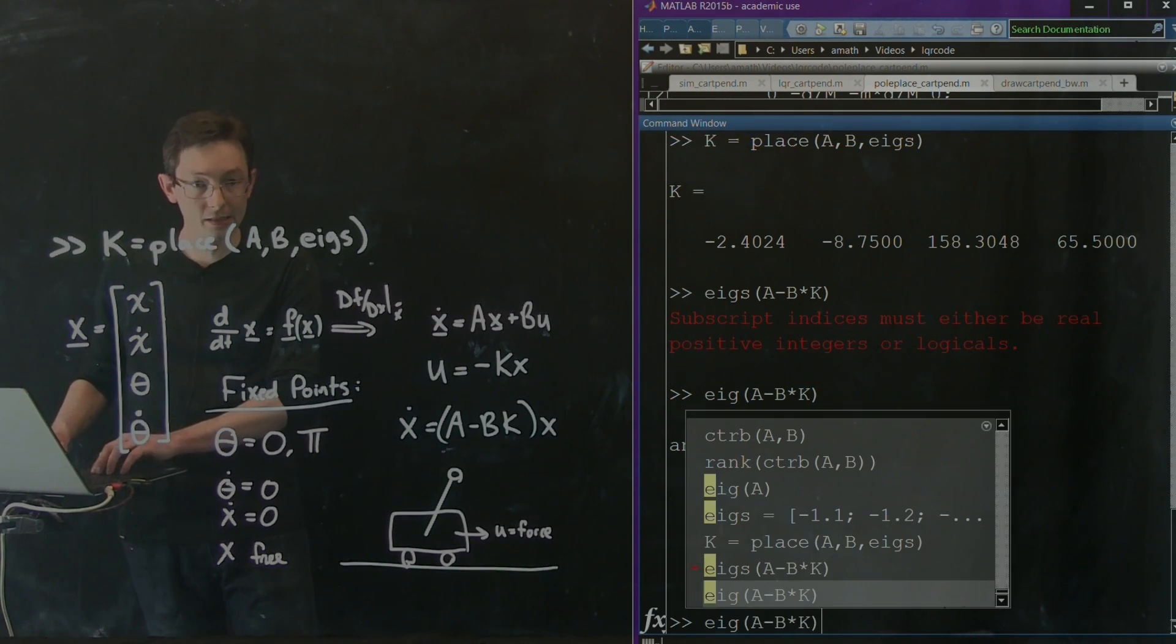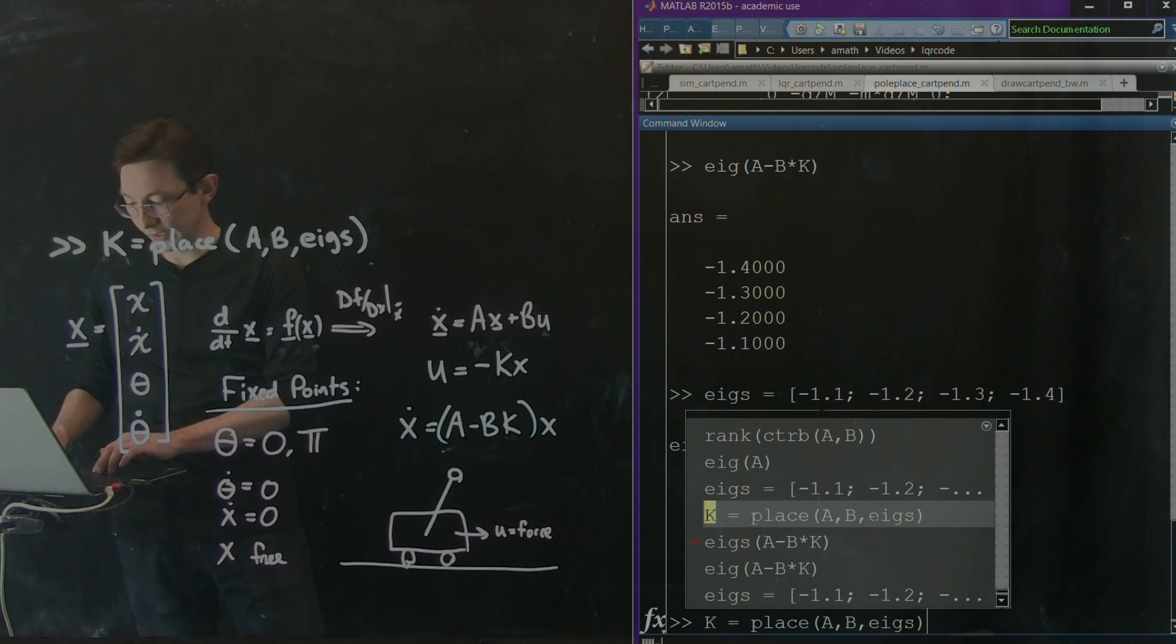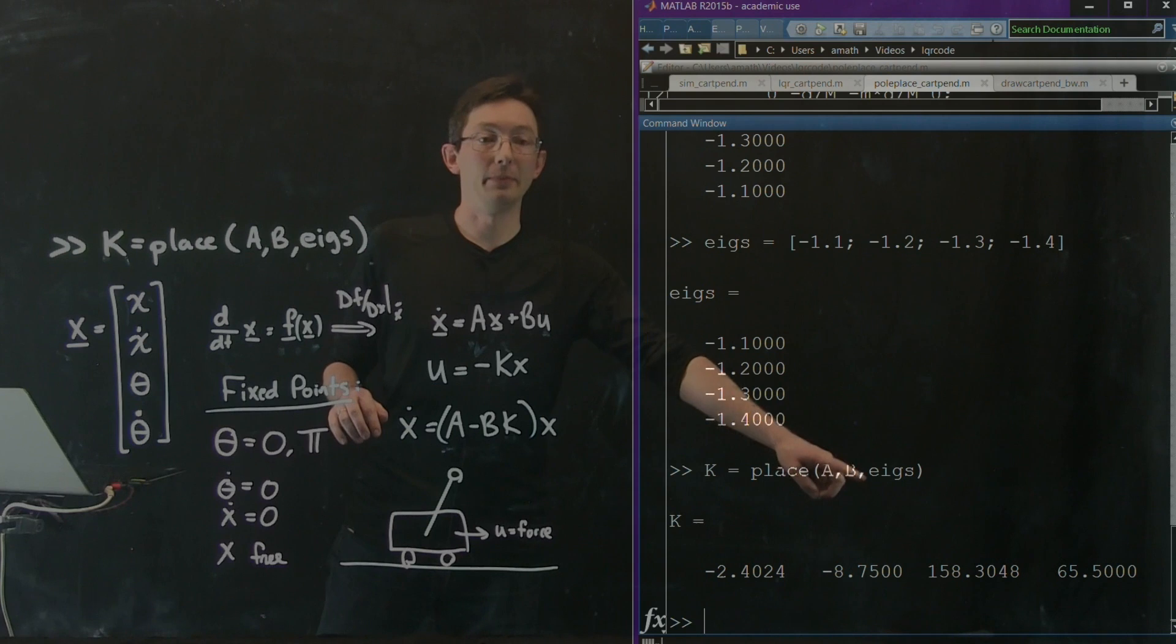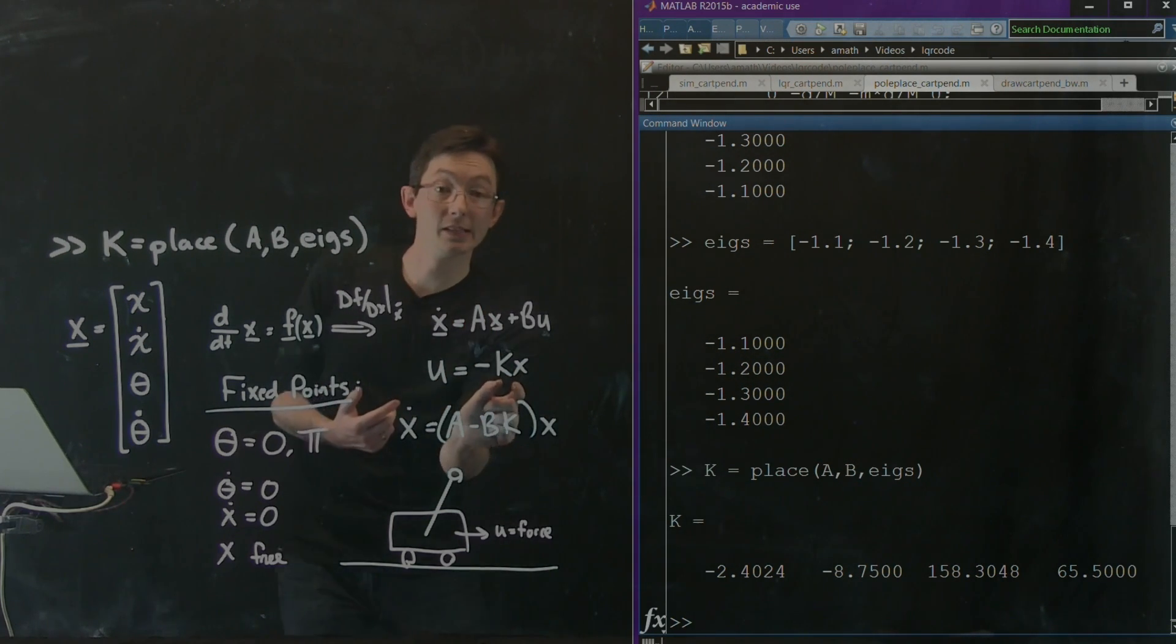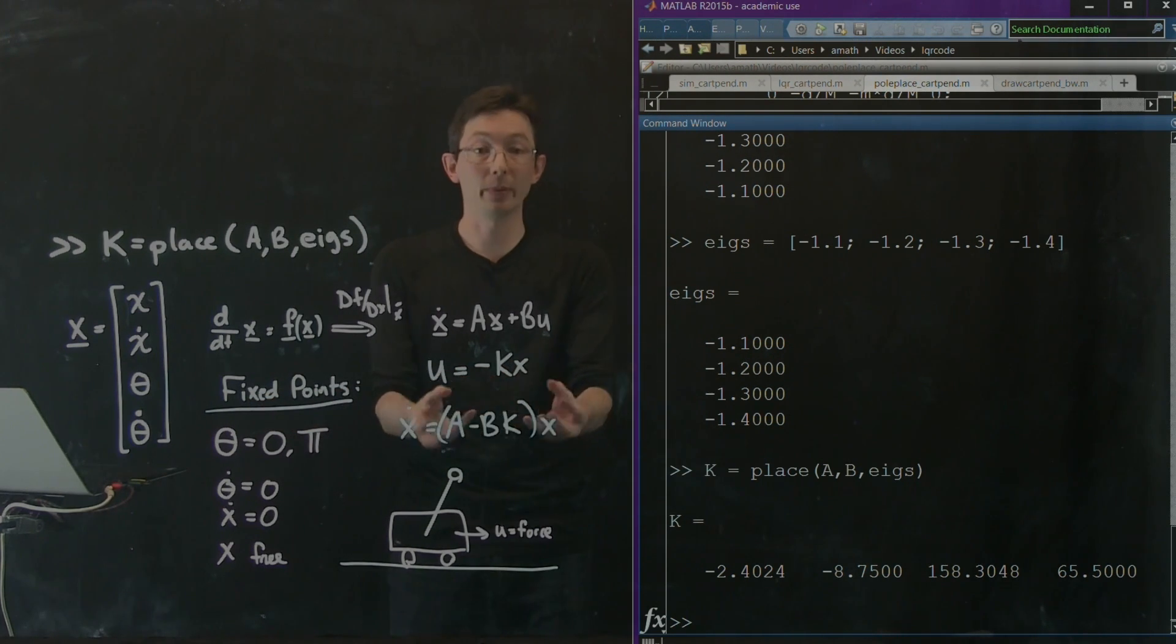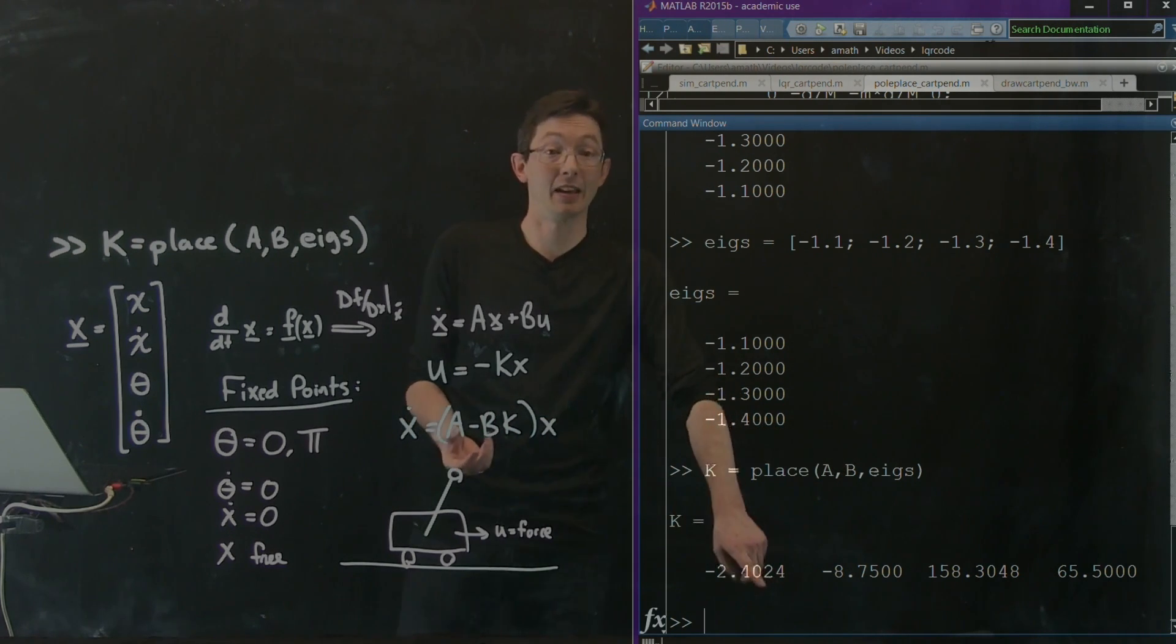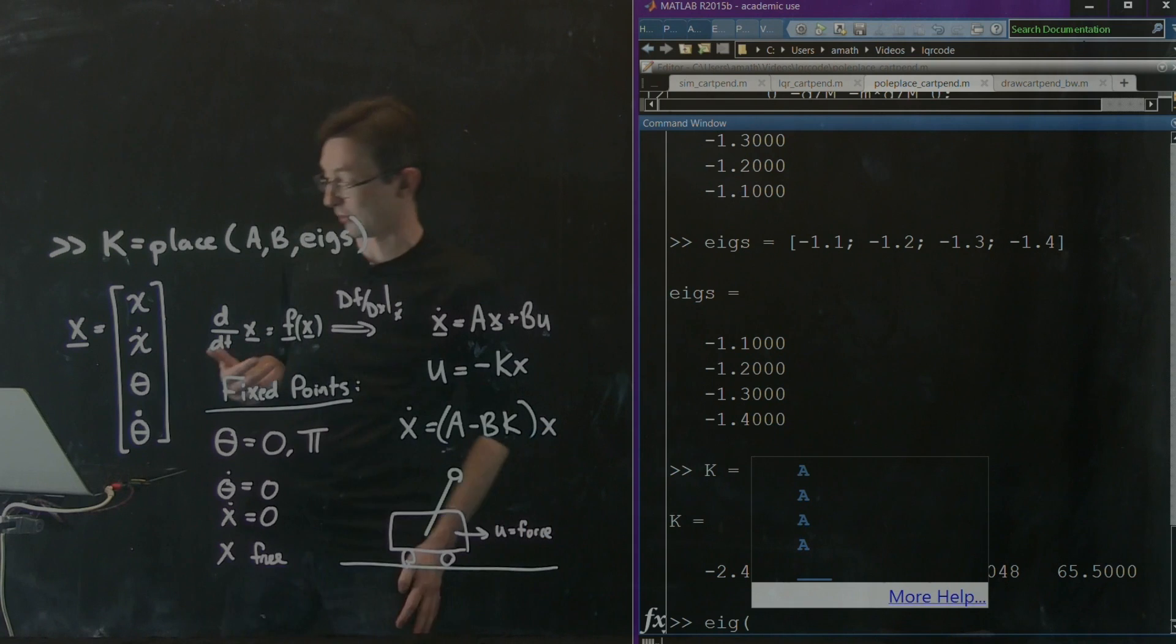So we said eigs equals this. We specified the eigenvalues we wanted. And then all we did was we said k equals place A, B, eigs. This is a built-in MATLAB function that tells me what is the controller k, this proportional feedback controller that will shape the closed loop eigenvalues to be the eigs that I specified. And this is that k.